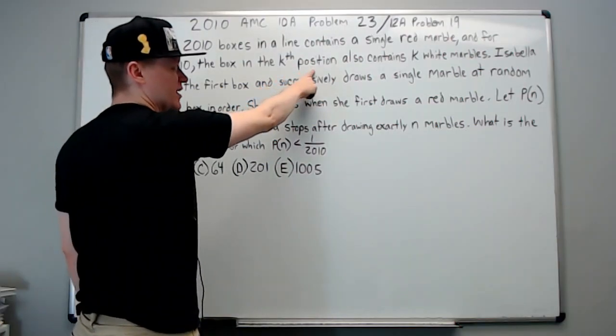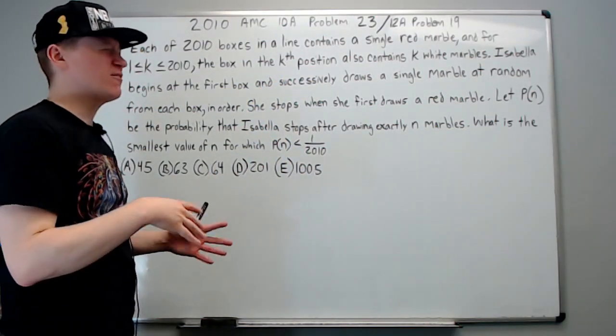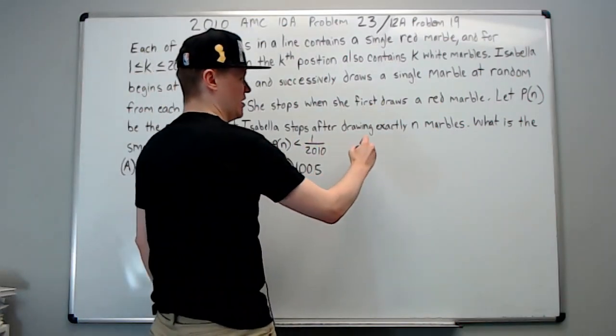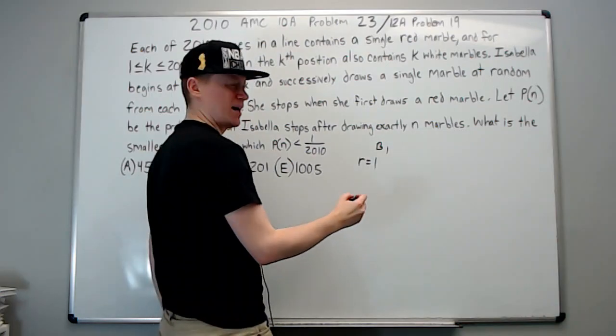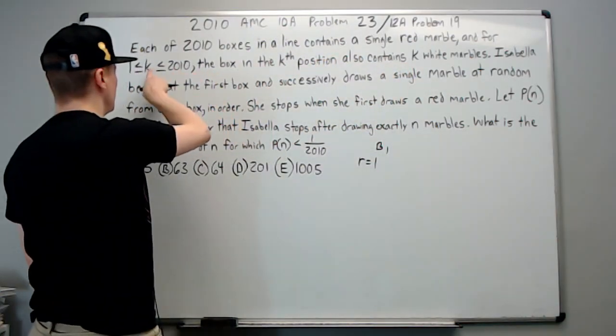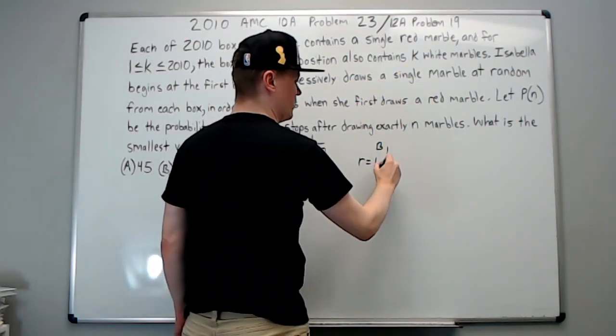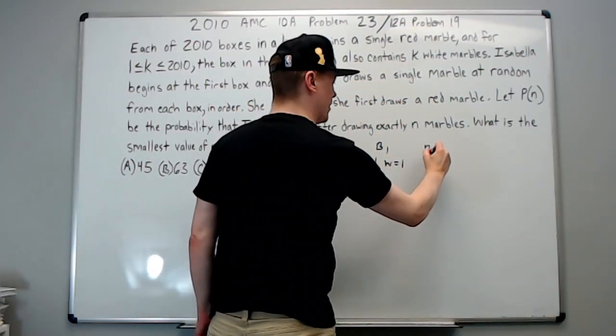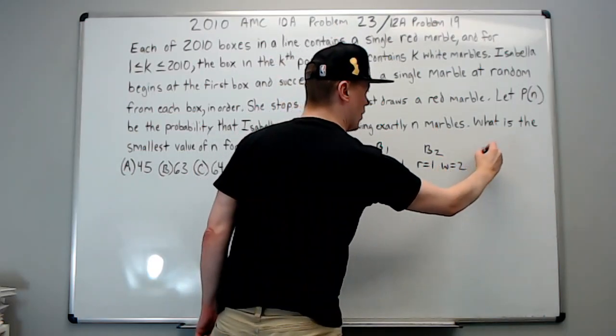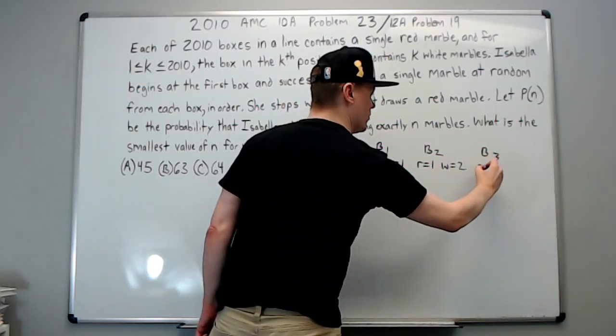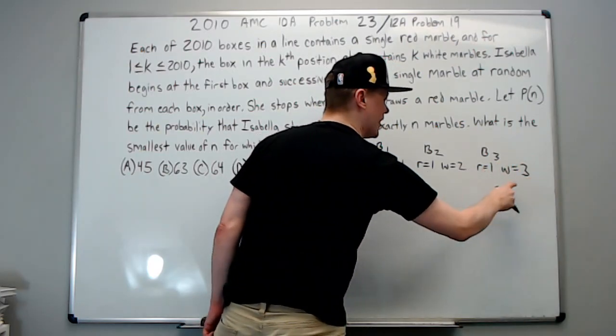Before we read on, let's make sense of that. So box one is going to have the one red marble that every box has, and since k is one, this is the first position, it's also going to have one white marble. What about box two? It will have the single red marble and two white. And box three will have the single red marble and three white. The number of white equals the box number. Okay, good so far.